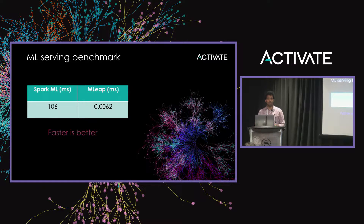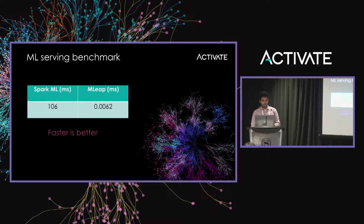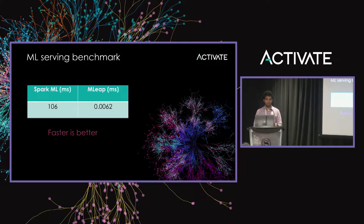Here comes MLEAP — a library really optimized for ML to be used at runtime without any dependencies, which can do faster predictions than Spark. This is my mic drop slide: Spark ML usually takes 100 to 200 milliseconds for predictions on single documents, whereas MLEAP takes about six microseconds — one-thousandth of a millisecond — to do predictions. So now we can confidently integrate this into our search framework where someone can incorporate a trained model in their pipeline to do predictions at search time.